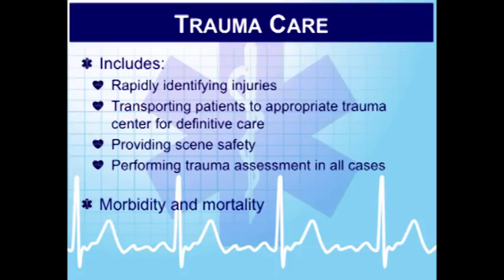Trauma poses a very significant threat to life, and it's important for us as providers to identify injuries and transport patients to appropriate trauma centers for definitive care. You can have minor injuries, you can have major injuries — we need to make the right decisions. We have to identify life-threatening illnesses and injuries because it will improve patient outcomes. Pre-hospital, we're talking about scene safety, rapid immobilization, stabilization, and transporting to the proper facility. We need to make the determination on scene: is this an ALS transport or a BLS transport?